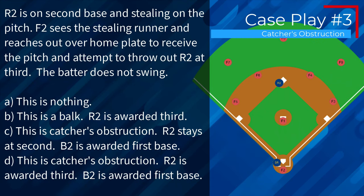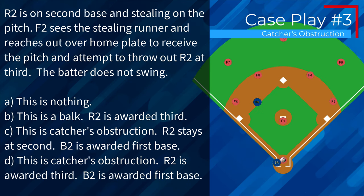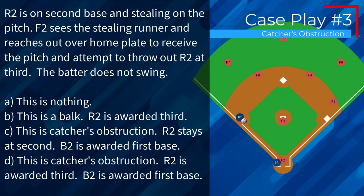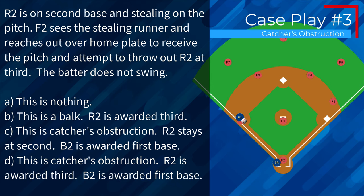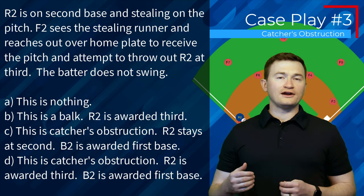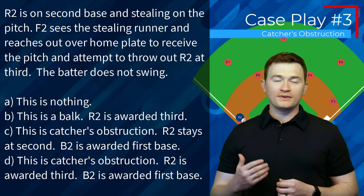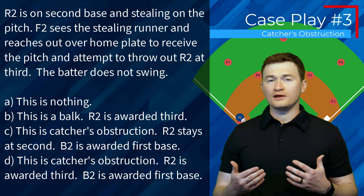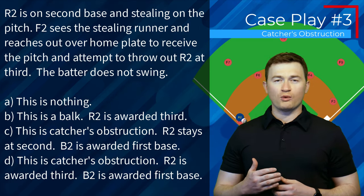Case play number three. R2 is on second base and stealing on the pitch. F2 sees the stealing runner and reaches out over home plate to receive the pitch and attempt to throw out R2 at third. The batter does not swing. Is this A, nothing; B, a balk, R2 awarded third; C, catcher's obstruction, R2 stays at second, B2 awarded first; or D, catcher's obstruction, R2 awarded third, B2 awarded first? The correct answer is D — this is still catcher's obstruction, and since R2 was stealing, R2 will be awarded third and the batter runner will be awarded first base.